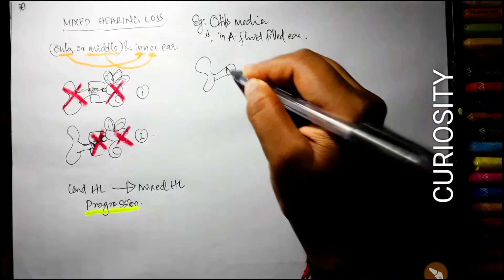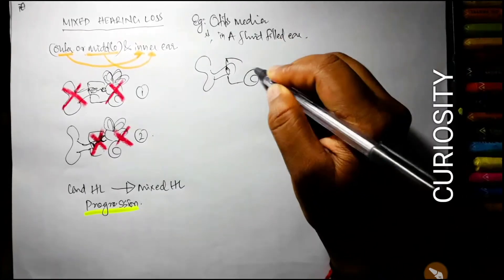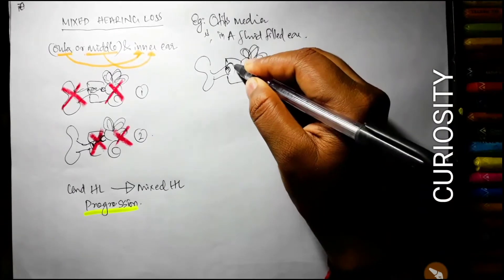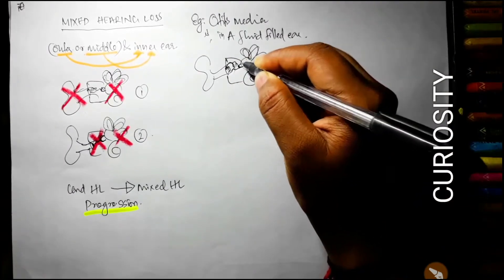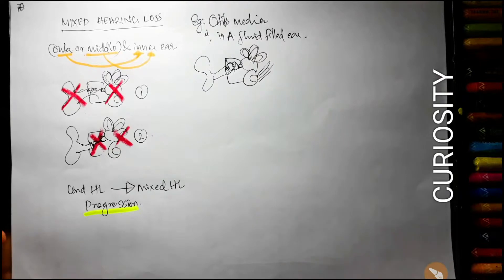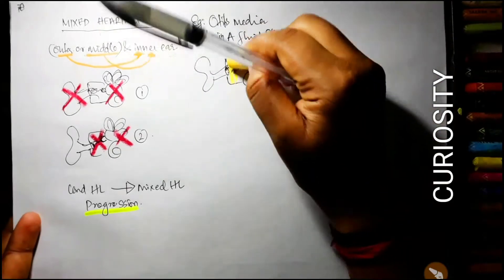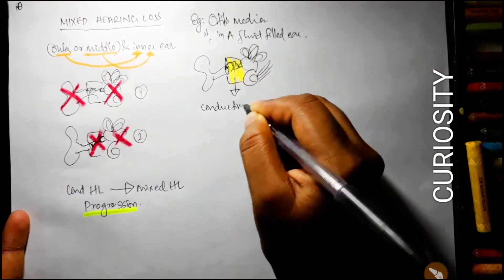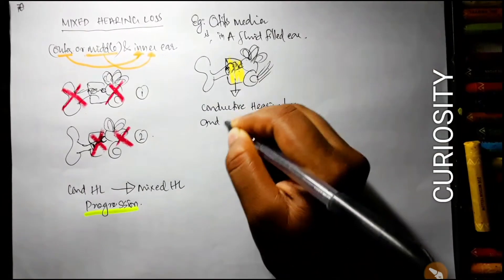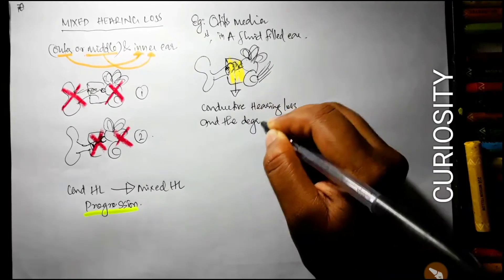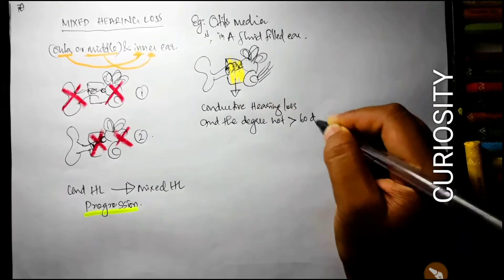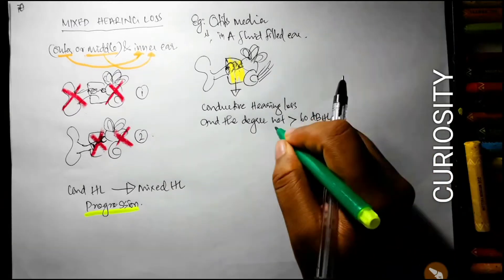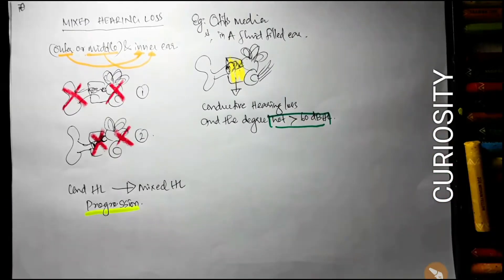For example, otitis media. I will explain about two conditions. First one is in a case of otitis media, the middle ear will be fluid filled. In the first anatomical video, I have explained that middle ear is an air filled cavity. But due to infections or eustachian tube dysfunction, this middle ear gets filled with fluid and that can lead to conductive hearing loss. And the degree of hearing loss will not exceed 60 dB HL.